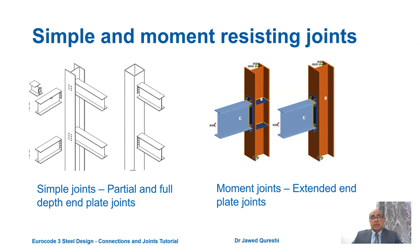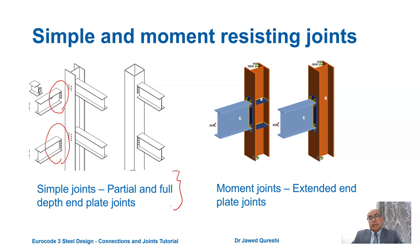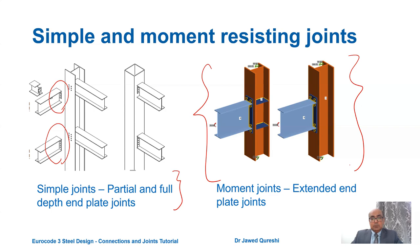Simple joints do not take any moment at all. They rotate at the ends and as a result there is always going to be a gap between the end of the beam and the column. Partial depth and full depth end plate joints are classified as simple joints, where lateral loading is resisted by bracing. Extended end plate joints are termed as moment resisting joints, which transfer moment from the members to the joint.